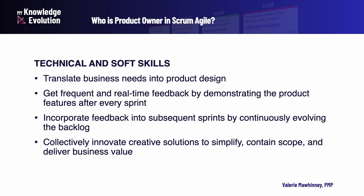Product Owner technical skills: they need to translate the business needs into product design, get frequent and real-time feedback by demonstrating the product features after every sprint, incorporate feedback into subsequent sprints by continuously evolving the backlog, and collectively innovate creative solutions to simplify, contain scope, and deliver business value.